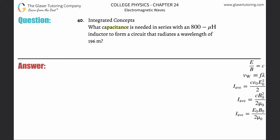Number 40, integrated concepts. What capacitance is needed in series with an 800 microhenry inductor to form a circuit that radiates a wavelength of 196 meters? All right, so first of all they're telling us a wavelength of radiation.